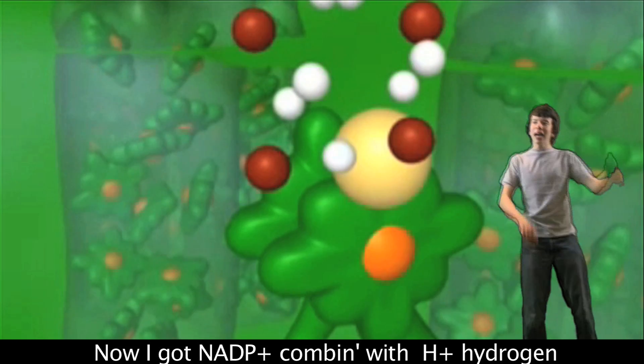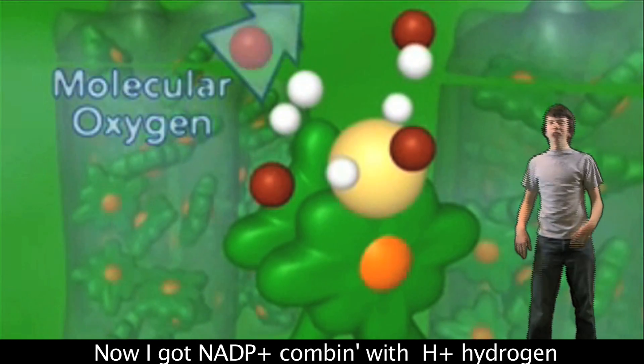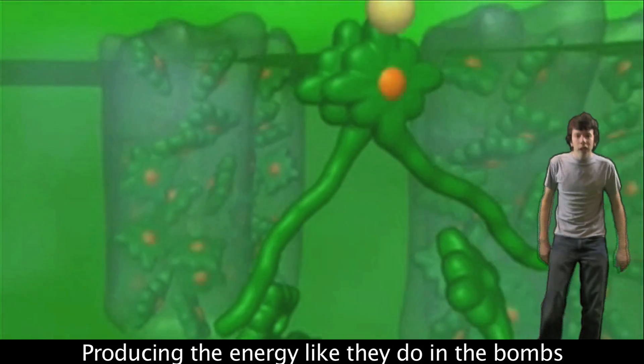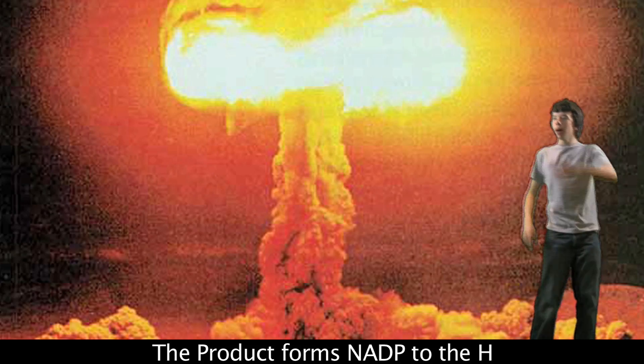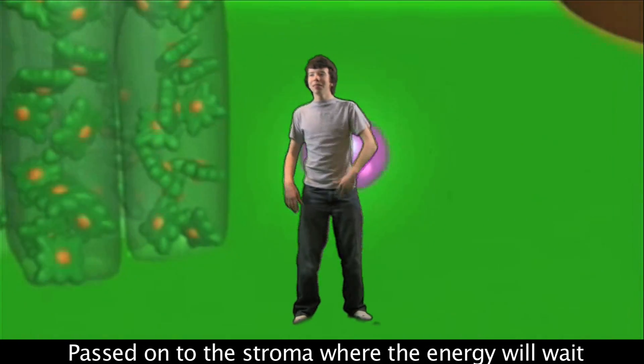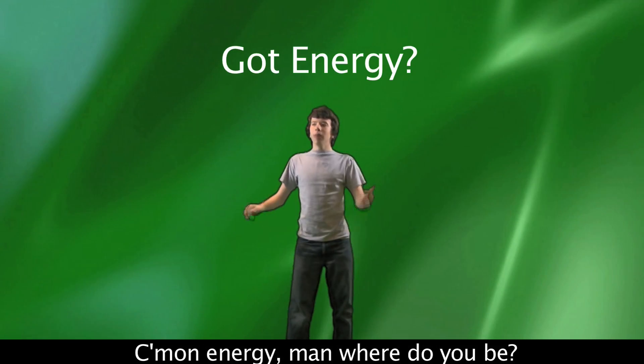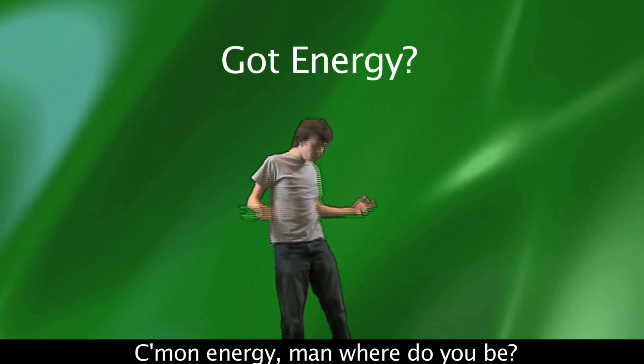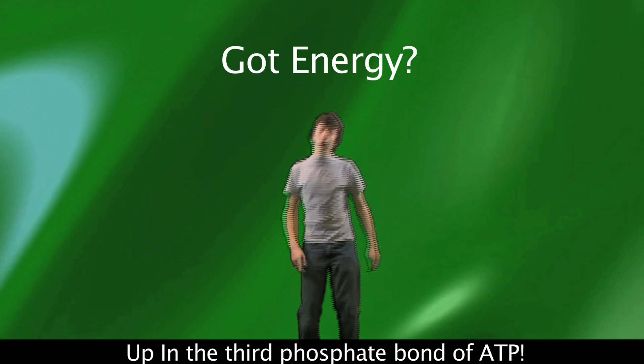and this is it. Now I got NADP plus component with hydrogen, reducing energy like they do in bombs. The product turns NADP to NADPH, passed onto the stroma where the energy will wait. Come on, energy, man, where you be? Up in the third phosphate bond of ATP.